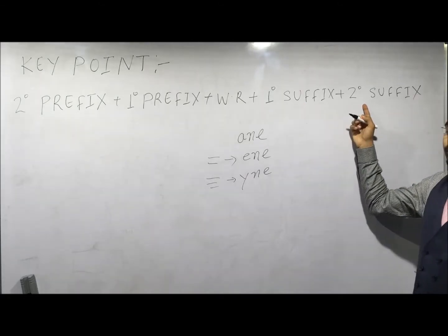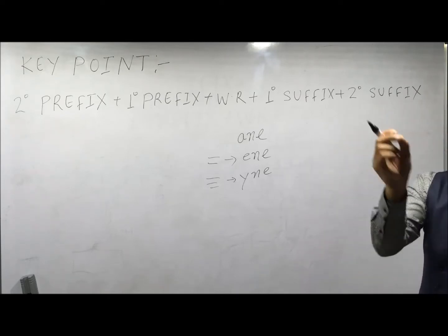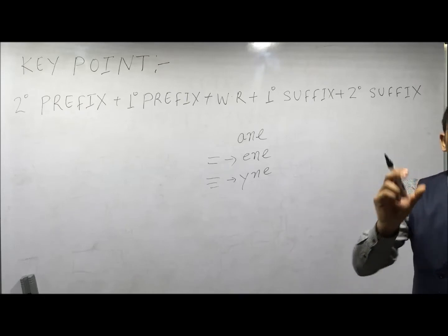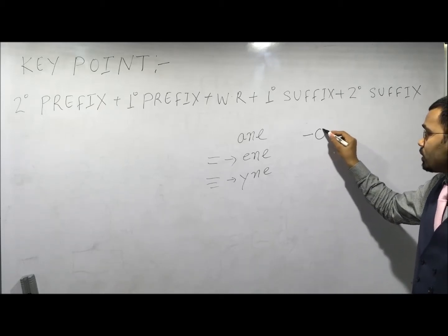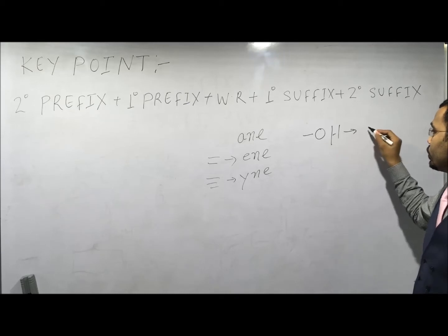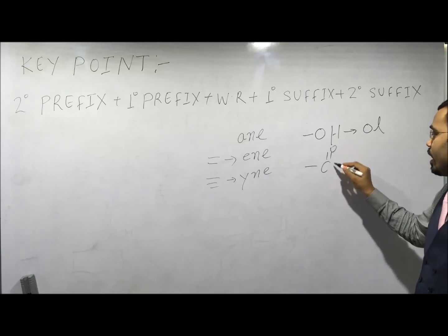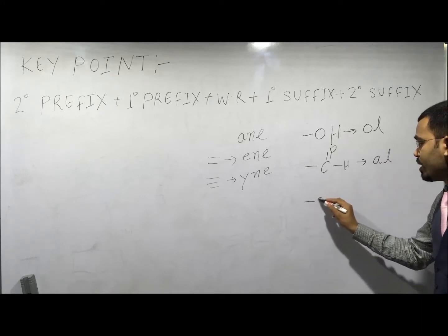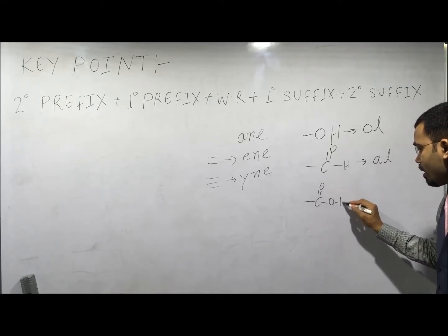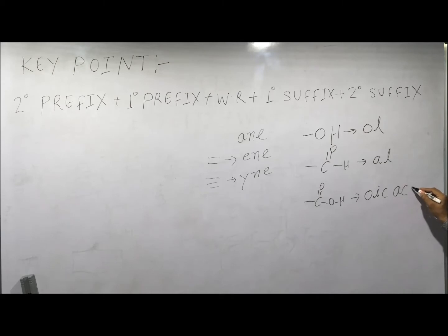Secondary suffix is the name of the principal functional group present in the parent chain. For example, if the principal functional group is alcohol, then we use -ol.